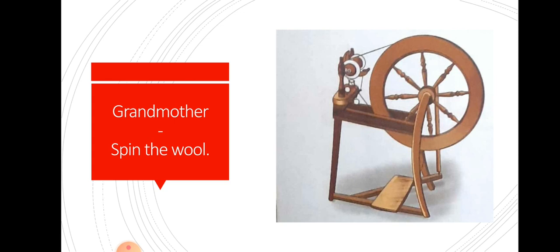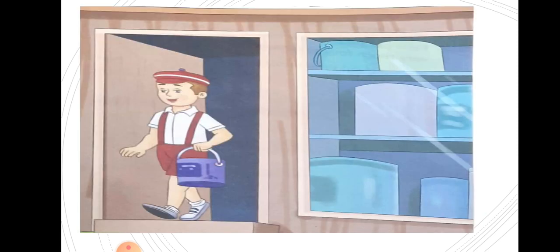Now we'll continue the story. So then Pelle went to his neighbor, a painter, and asked him for some paint. Why is he asking for paint? Because he wants to color his wool.